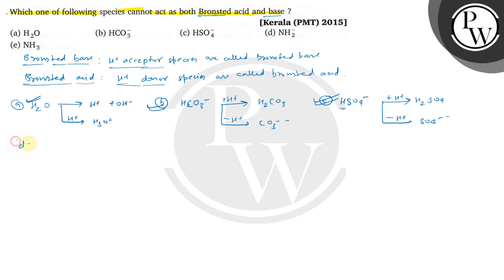Option D is NH2-. If we have NH2-, it will accept the proton and produce ammonia. But when we add this proton, we cannot lose the proton again.